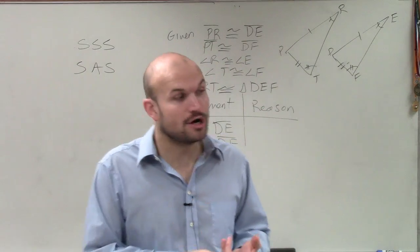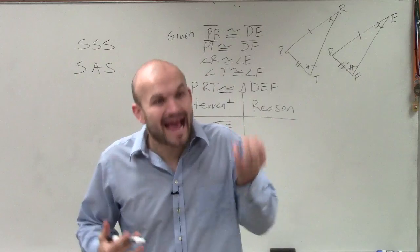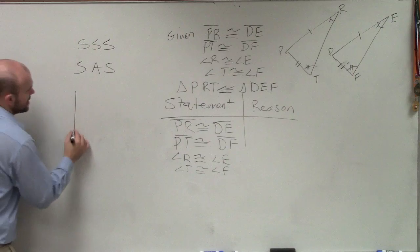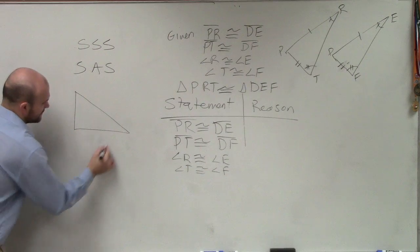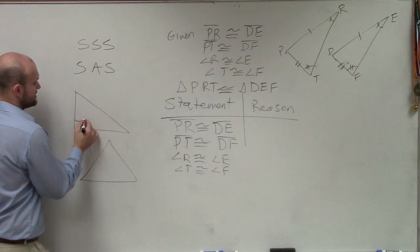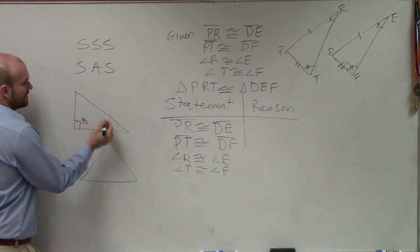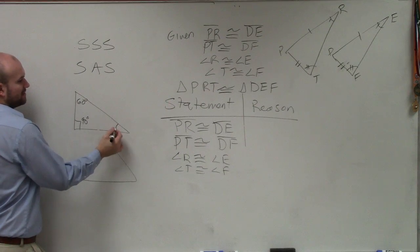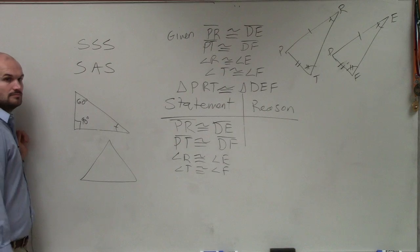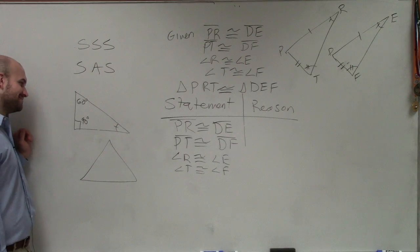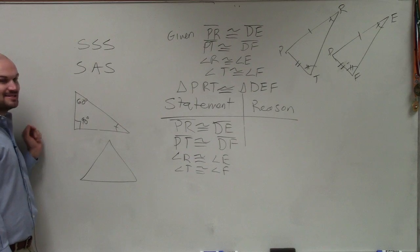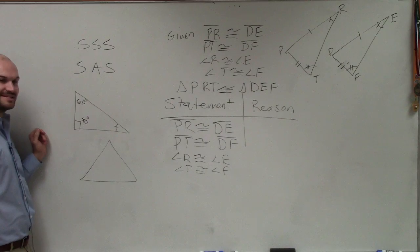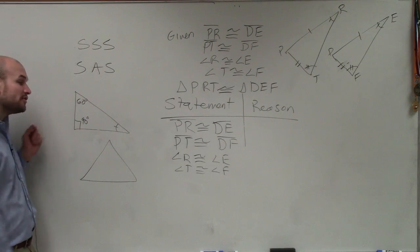We don't have side, side, side. And we don't have side, angle, side, because our angle has to be included. But let me go and think about this. If I gave you a triangle - actually, I'll give you three triangles. Let's say this is 90 degrees, and let's call this 60 degrees. Sierra, do you know what this angle has to be right here? 90 plus 60 is 150. So what does this measurement have to be? 30 degrees.